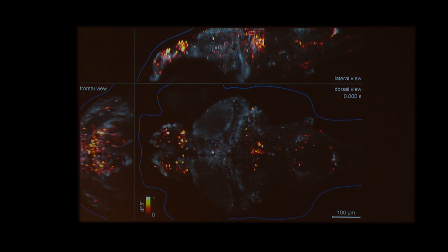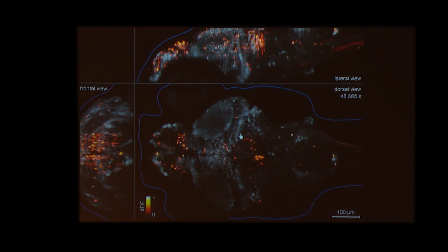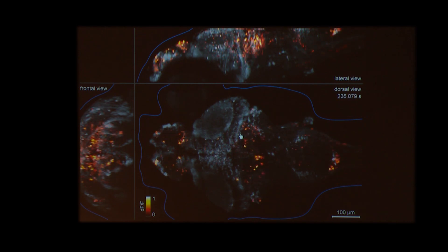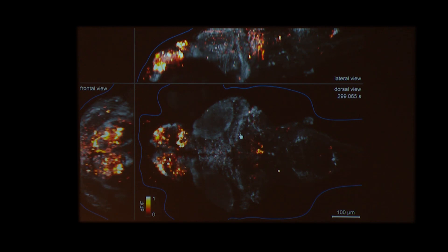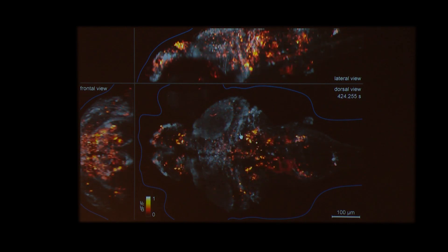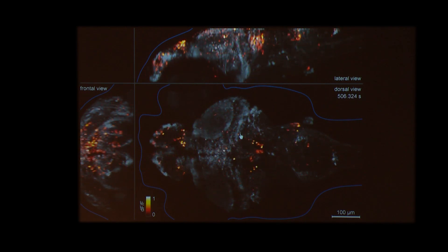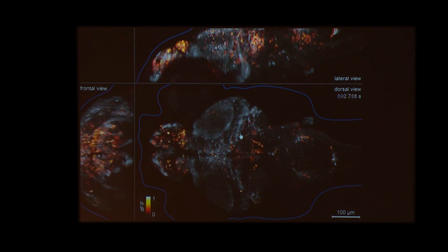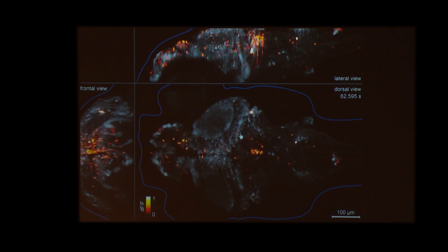This zebrafish larva is immobilized with no sensory input and no light — so what you're seeing is called spontaneous activity. But every once in a while the pattern changes. Something happened in the brain of the zebrafish that is unrelated to anything the zebrafish is experiencing or moving. It's really clear that we don't understand the first thing about it.